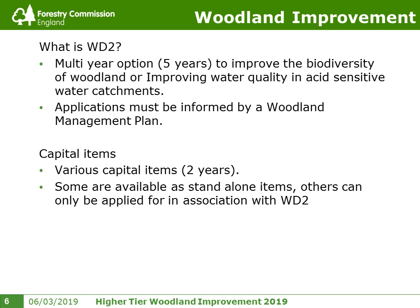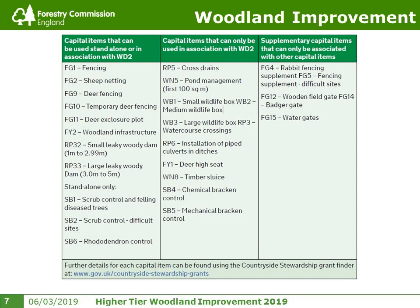Where it's complementary and not used to fund the same work, multi-year and capital woodland improvement options can be applied for on the same land. Alongside WD2 there are a range of capital items. There are two years to do the work and a further three months to claim for capital items. Some are available as standalone capital items, and others can only be applied for in conjunction with WD2. The higher tier manual includes a table outlining all capital items and which must be used in conjunction with WD2.